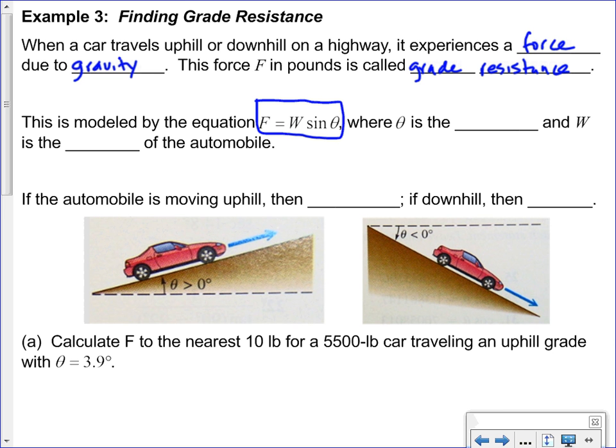If you're walking upstairs, it's way harder than walking downstairs because you're experiencing that force of gravity. It is modeled by this equation right here. The equation will be given to you on the test. What it says is that force is equal to W times sine of theta, where theta is the grade of the steepness of the hill and W is the weight of the automobile. There's three variables: F, W, and theta. You're going to know two and solve for one of them.